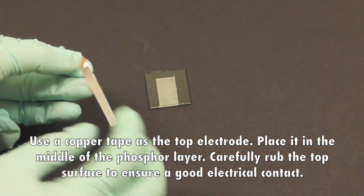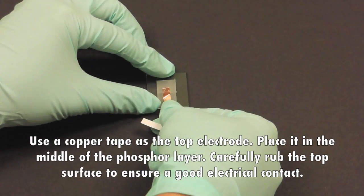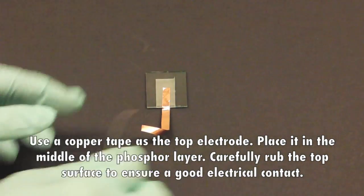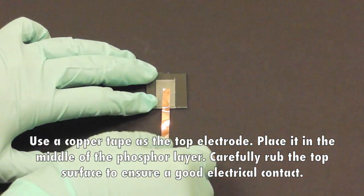Use a carpet tape as the top electrode. Place it in the middle of the phosphor layer. Carefully rub the top surface to ensure good electrical contact.